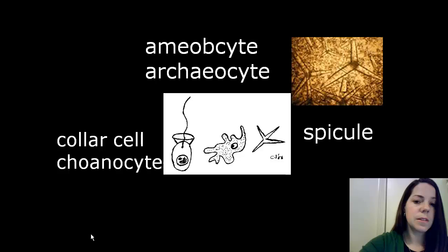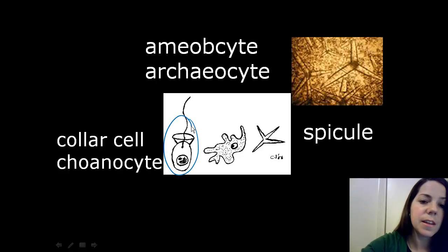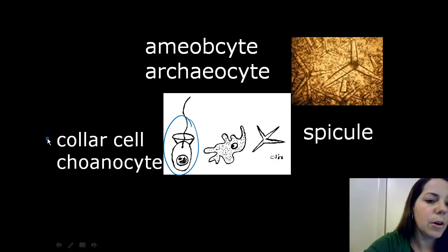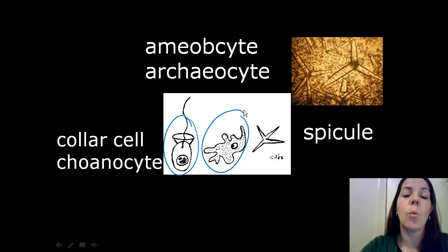Now, within the cell, there's also some specialized cells that have more than one name. So beginning with the collar cells that line the inside of the sponge, they can be called collar cell as well as choanocyte. So you need to be familiar with both those names. The amoebocyte is the wandering cell. That means it can wander throughout the body wall of the entire sponge. So it again has two names, amoebocyte and archaeocyte. And again, you have to be familiar with both those names.